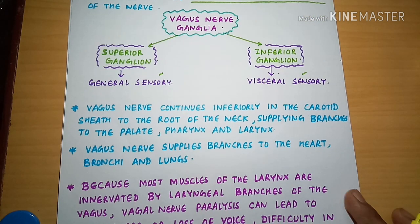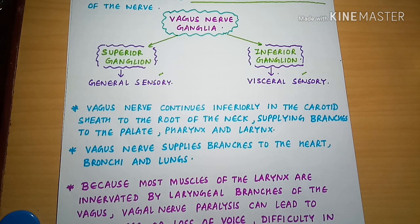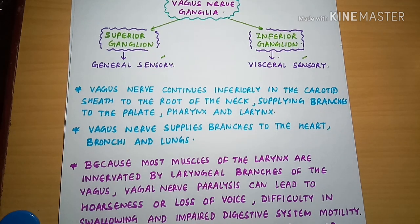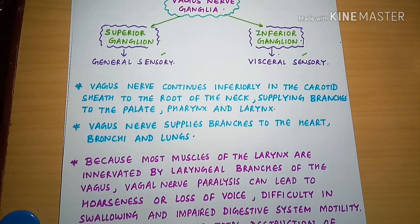The Vagus Nerve continues inferiorly in the carotid sheath to the roots of the neck, supplying branches to the palate, pharynx, larynx, heart, bronchi, and lungs. If the Vagus Nerve becomes paralyzed, since most muscles of the larynx are innervated by its laryngeal branches, it can lead to hoarseness or loss of voice.